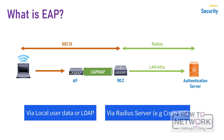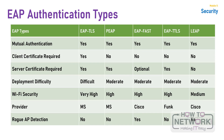There are multiple types of EAP; the three most commonly used are EAP-TLS, PEAP, and EAP-FAST. PEAP is currently the most prominently used as it is used with Microsoft servers. However, EAP-TLS is gaining in popularity as it can be supported by Cisco ISE.